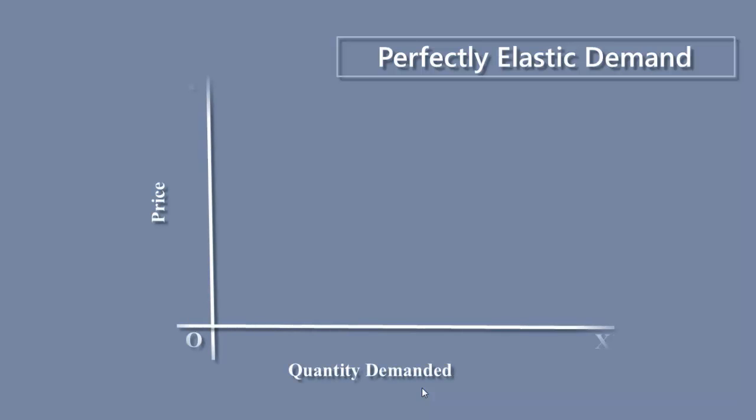Perfectly elastic demand. An infinitesimal fall in price causes quantity demanded to increase infinitely. Look at the demand curve — it is flat, horizontal, and parallel to the x-axis. It means the fall in price is insignificant, but an innumerable quantity of good is demanded. We define perfectly elastic demand as a situation in which infinite quantity is demanded at the existing price.